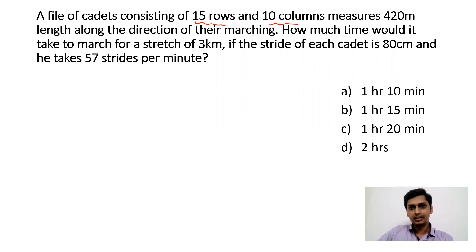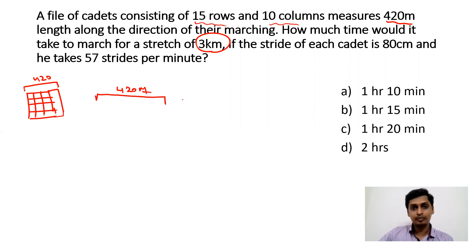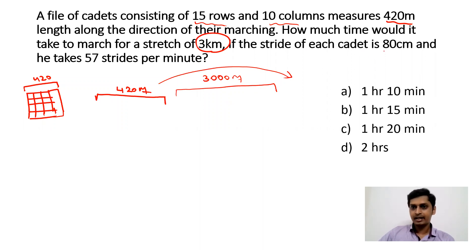These people are marching and their length is 420 meters. They have to cross a stretch of 3 km, which is 3000 meters. So these people have to cross this 3000 meter stretch. Now, what is the speed of these cadets? The stride of each cadet is 80 centimeters, and in each minute they will take 57 such strides. So we have to find the time taken by these cadets to cross this platform.